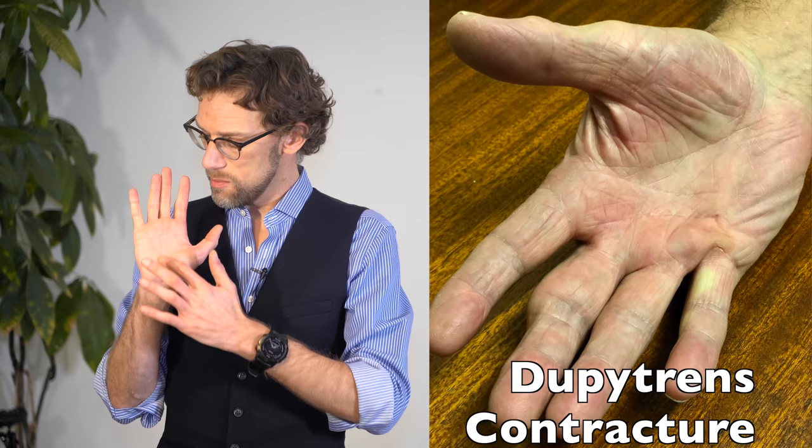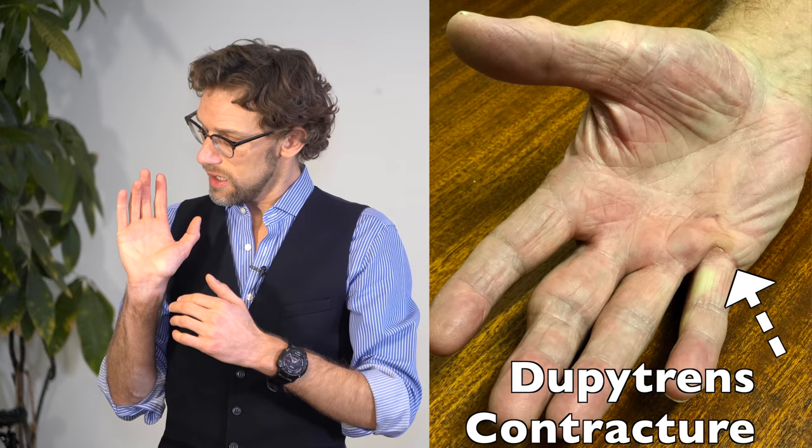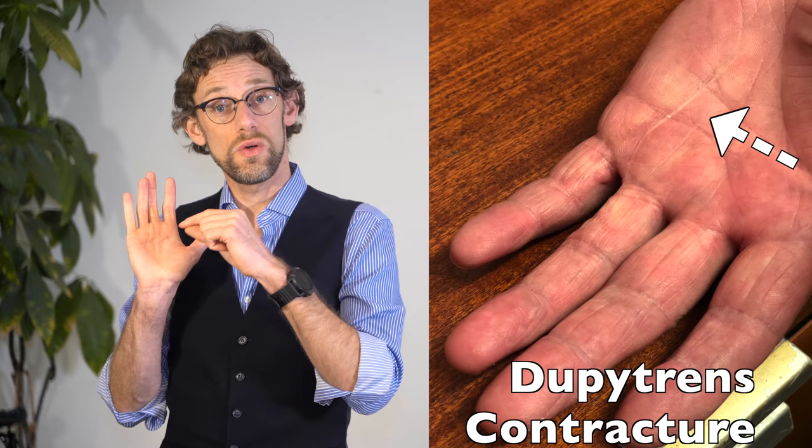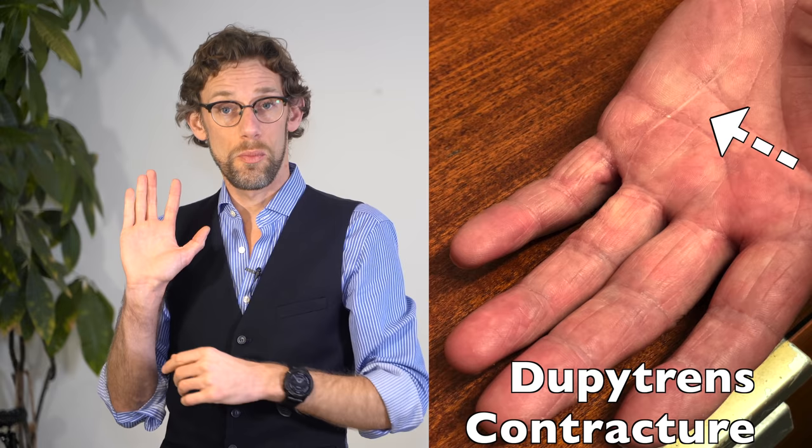One of the final things that we'll look for in the hand is Dupuytren's contracture where we get thickening of the palmar fascia pulling down the little and ring fingers. Now we can treat this surgically so we can release this contraction and we can also do injections to dissolve that tight tissue allowing us to open the fingers up again.